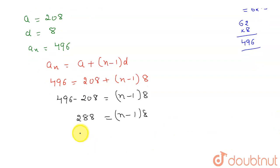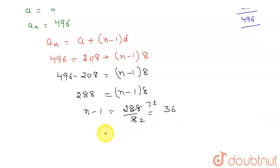From here I can write n minus 1 to be equal to 288 divided by 8, which will give me, on dividing, 36. So n minus 1 is coming to be 36. So the value of n will be 36 plus 1, which is 37.